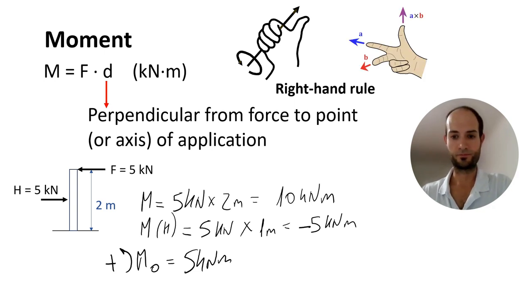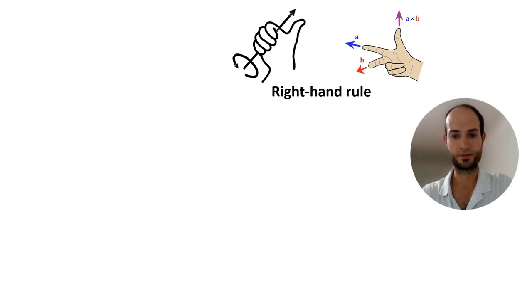And also, you can consider with just three fingers. The index is the force, the middle finger is the distance, and then the thumb, as before, is pointing in the direction of the moment.